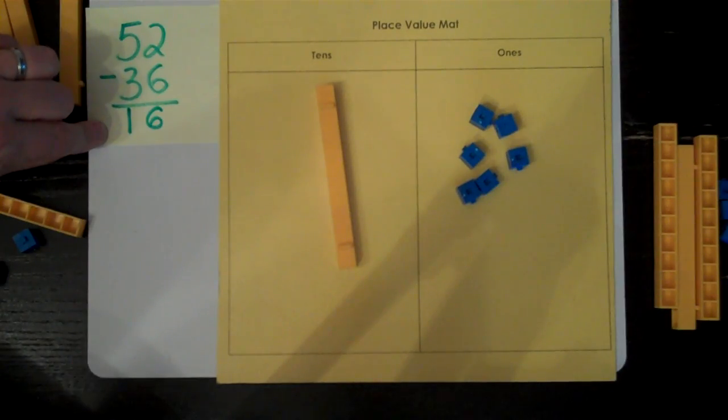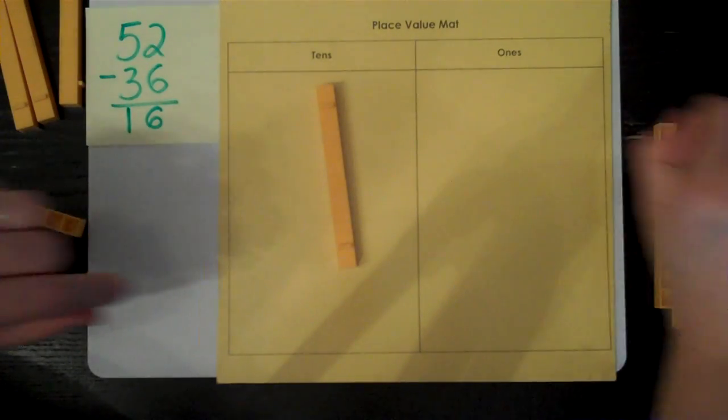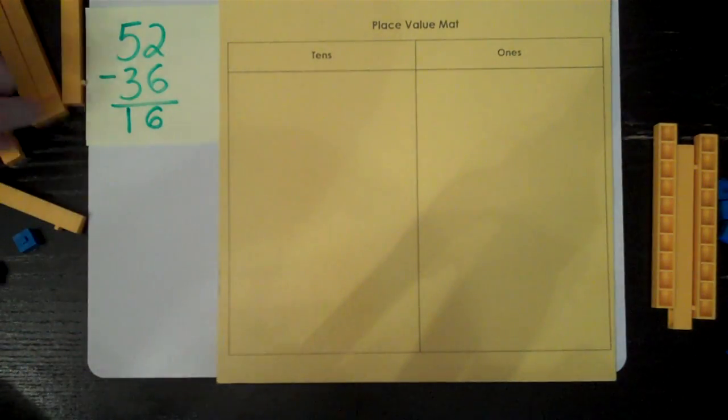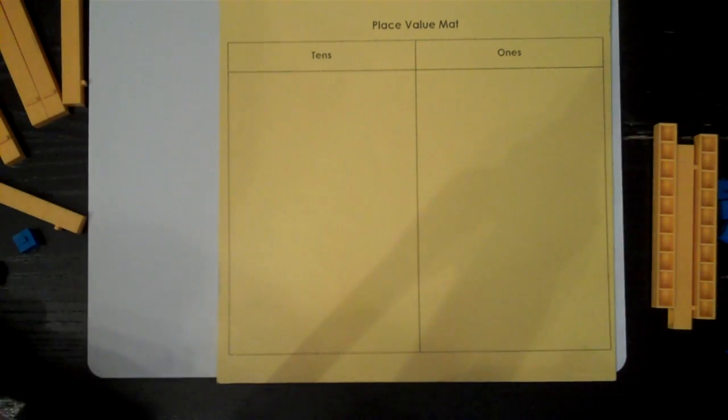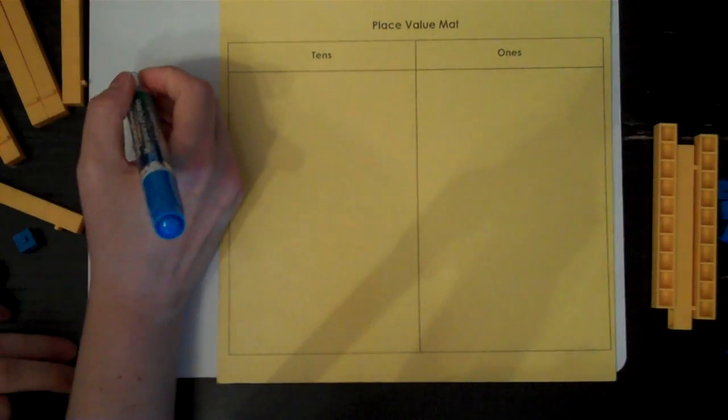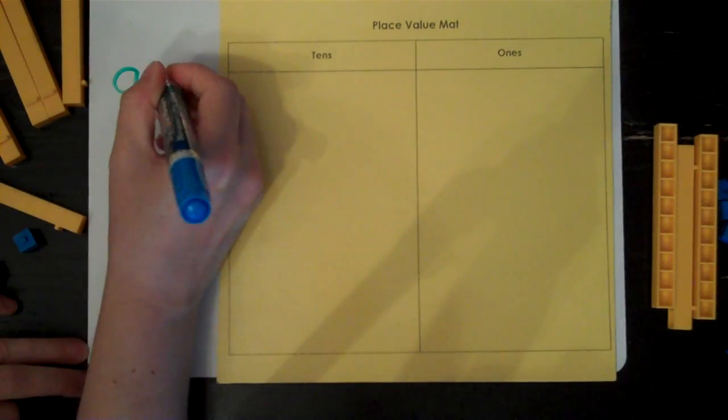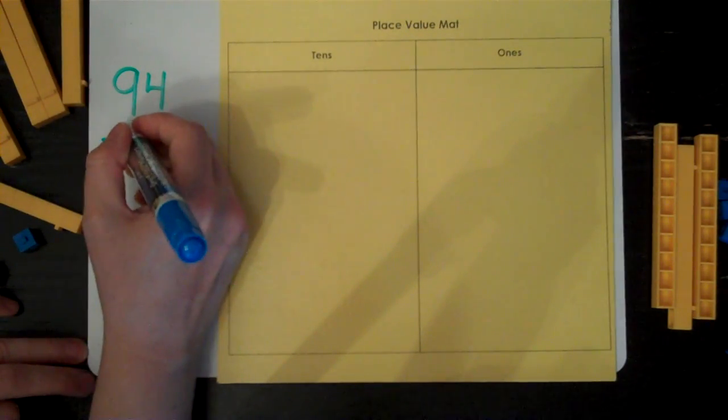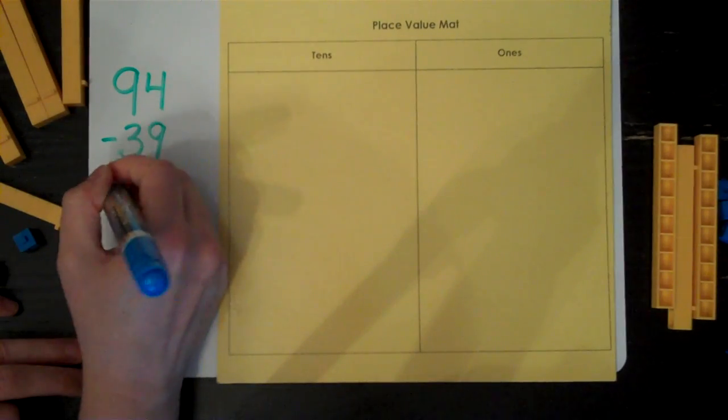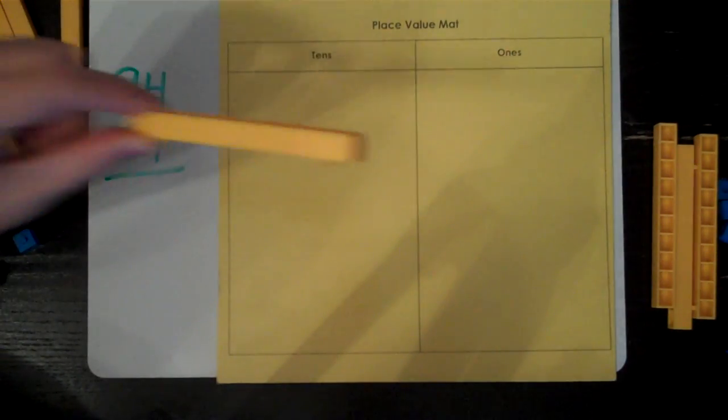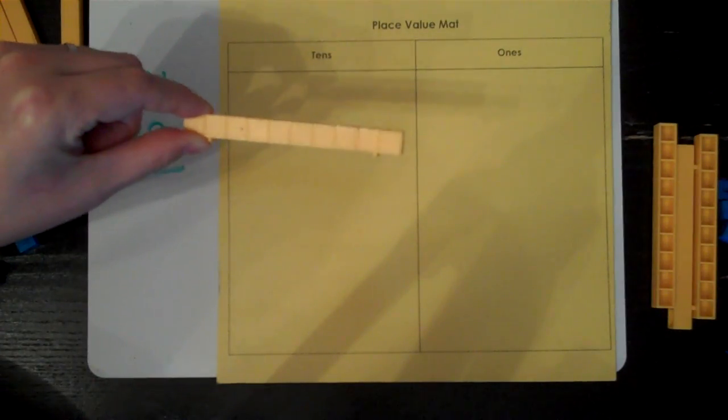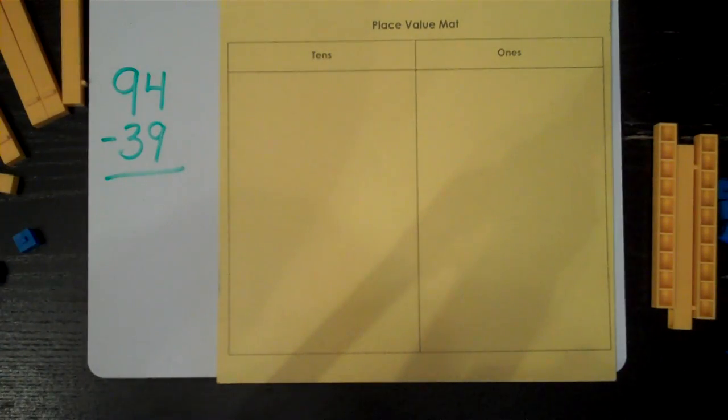Before we go on to the next question, remember always to clear your mat. Are you ready for a tricky one? I'm going to leave one for you to try on your own. Make ninety-four and take away thirty-nine. Don't forget that you will need to trade one ten for ten ones. Have fun!